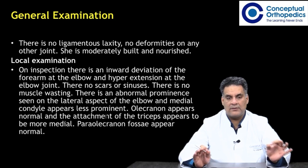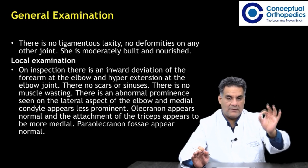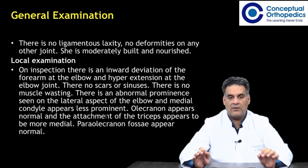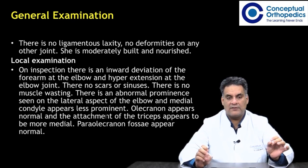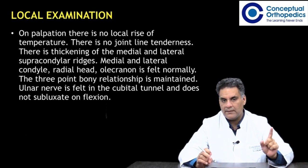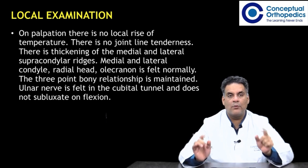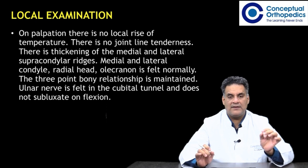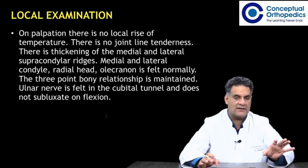There is an abnormal prominence on the lateral aspect of the elbow but the medial side appears less prominent. The olecranon is normal and the attachment of triceps appears medial. The cubital fossa appears normal. On palpation, there is no local rise of temperature and no joint line tenderness. There is thickening of both the medial and lateral supracondylar ridges. Medial and lateral condyle, radial head, and olecranon are felt normally. The three-point relationship is maintained. The ulnar nerve is felt in the cubital tunnel and does not subluxate on flexion.